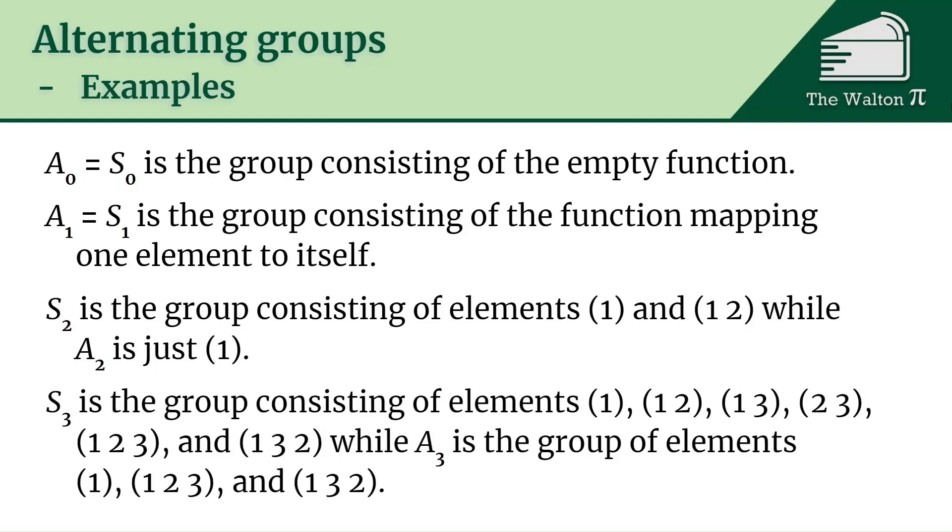S_3, that's the group consisting of elements (1), the identity element, don't switch anything. (1 2), take 1 send it to 2, take 2 send it to 1. The element (1 3), where 1 goes to 3 and 3 goes to 1. The element (2 3), where 2 goes to 3 and 3 goes to 2. The element that sends 1 to 2, 2 to 3, and 3 to 1. And then the last element sends 1 to 3, 3 to 2, and 2 to 1.